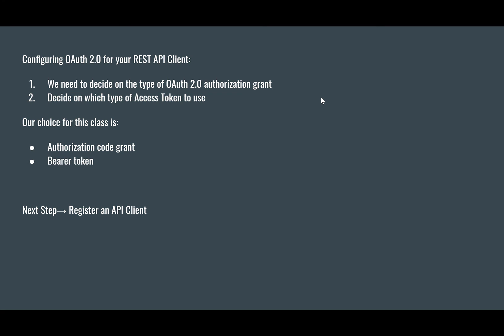For this class, we need to decide on the type of OAuth 2.0 authorization grant and which type of access token to use. Our choice is the authorization code grant and a bearer token. The next step is registering an API client — let the fun begin!